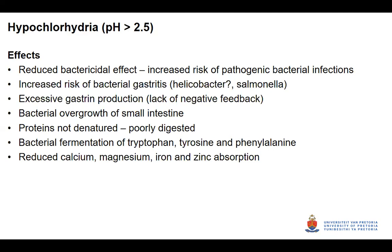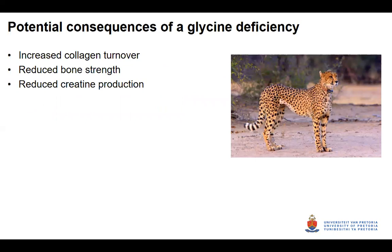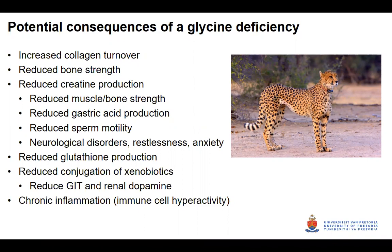In cheetahs with hyperchlorhydria, where pH is above 2.5, you get reduced bactericidal effects, an increased risk of bacteria like Helicobacter establishing in the stomach, excessive gastrin production due to lack of negative feedback, bacterial overgrowth in the small intestine enabling fermentation of aromatic amino acids, proteins not denatured and poorly digested, and reduced absorption of calcium, magnesium, iron, zinc, and some vitamins. So really, these multiple problems could all result from a glycine deficiency — and that leads into Catherine's talk, which she'll give in a moment.